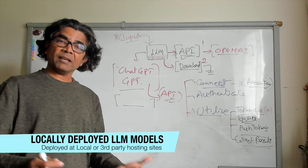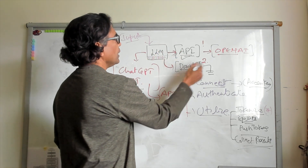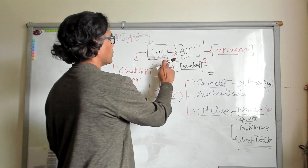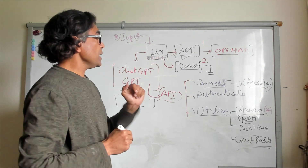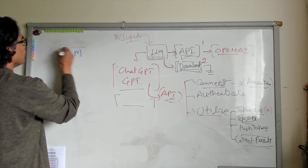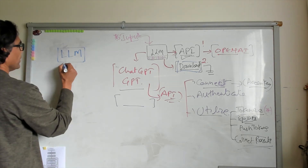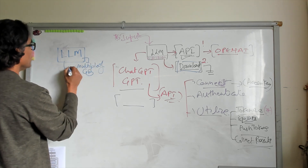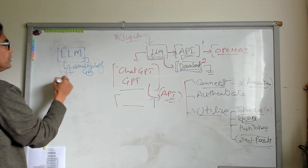In the next step, we take the example where a large language model has been created by a certain organization and that model is available as a downloadable binary object which we can utilize. The question is: if a large language model is available, how many ways can you get it? These models will be in multiples of GB — could be from 1 GB all the way to 10 GB or even more.